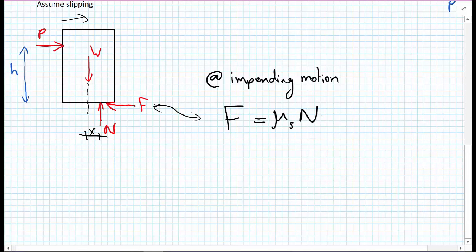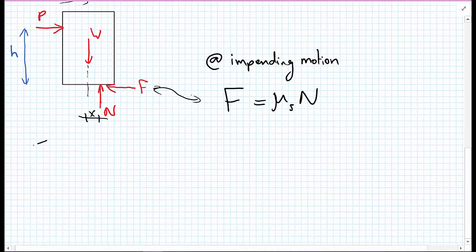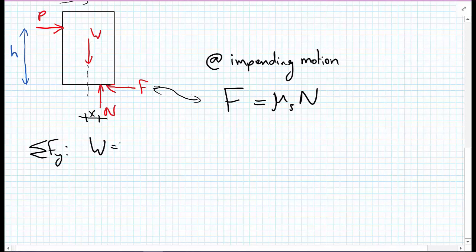If we look at equilibrium in the Y direction, sum of the forces in the Y direction, we can see that W must be equal to N. And if we apply the sum of the forces in the X direction to get equilibrium, we can see we have P pointing to the right, F pointing to the left, no other forces. So P must be equal to F.